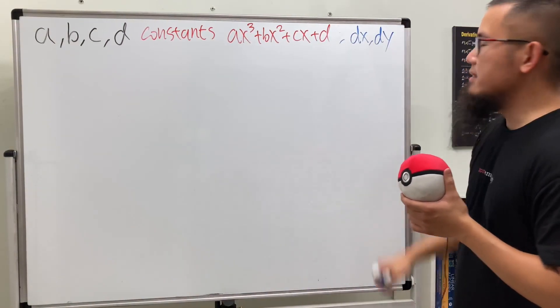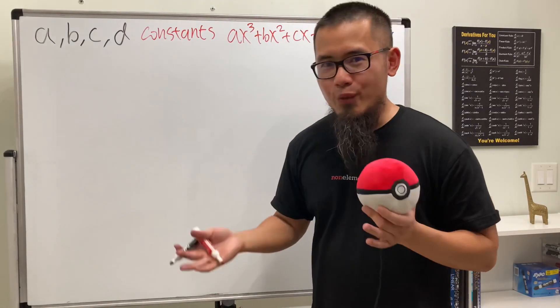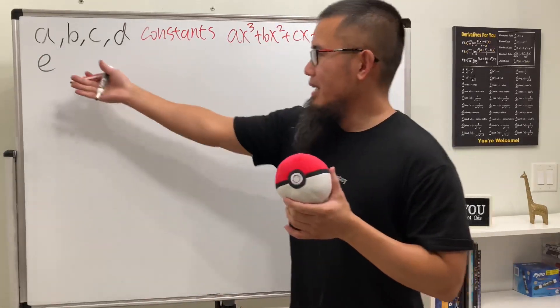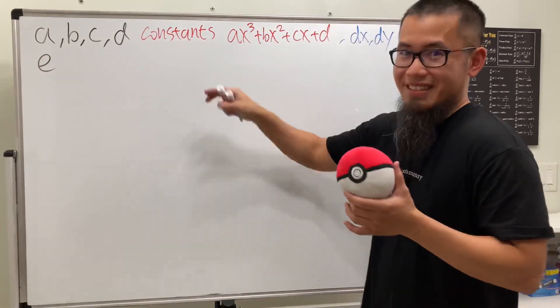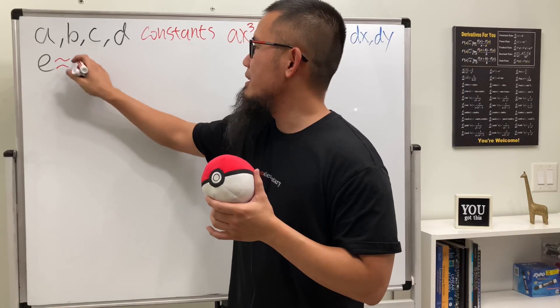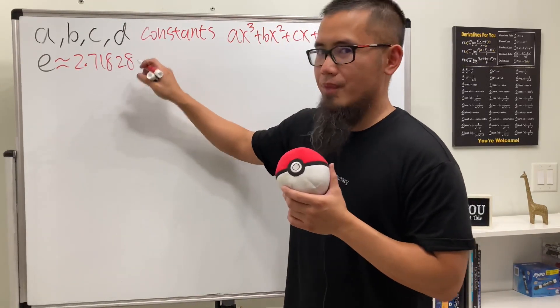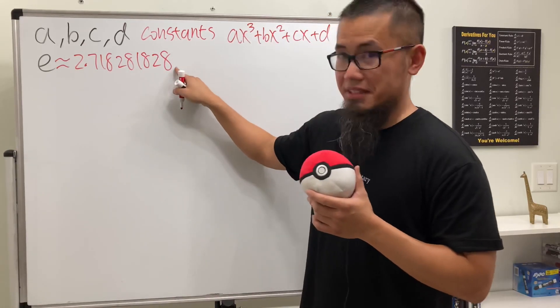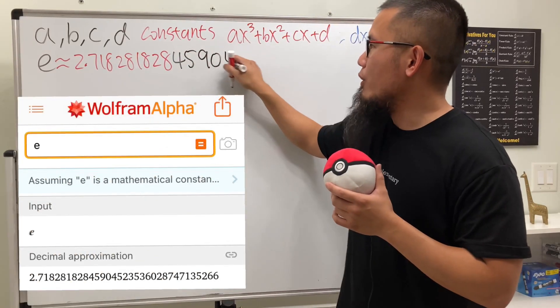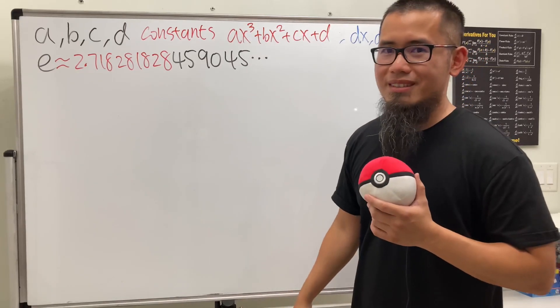Coming up next is the famous constant e. It has its own role because it's just that special. As we all know, this is approximately 2.71828182845904590...